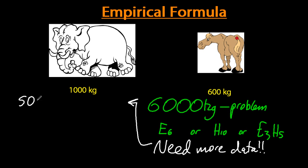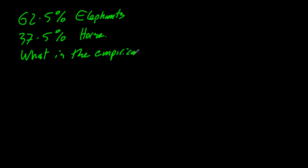And so if I tell you it's 50-50 by mass, then that extra information allows you to work out that it's E3H5. Now how did you do that? Let's try one you can't do in your head. 62.5% elephants by mass and 37.5% horses. What's the empirical formula, or what's the simplest ratio between elephants and horses?